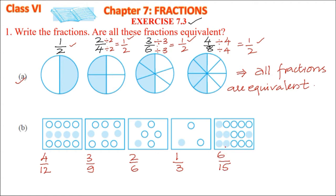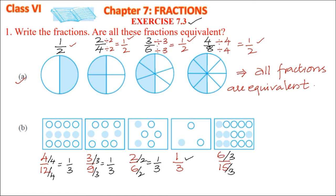To check equivalence, let's simplify each. Dividing 4 by 12 by 4 gives 1 by 3. Dividing 3 by 9 by 3 gives 1 by 3. Dividing 2 by 6 by 2 gives 1 by 3. The fraction 1 by 3 is already simplified. But dividing 6 by 15 by the highest common factor 3 gives 2 by 5, which is a different fraction. So these fractions are not equivalent.